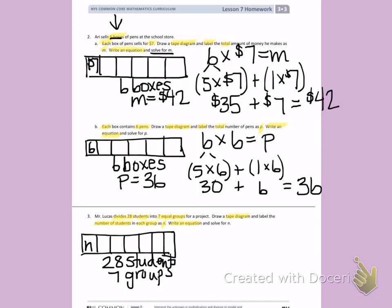When I look at my tape diagram, I see I have a total of 28 students. I have the amount of groups that I need, but I am missing my size. When I'm missing a size, I'm going to divide. 28 divided by 7 will give me N. I'm going to use my break apart strategy to break apart 28 into smaller numbers I can divide by 7.